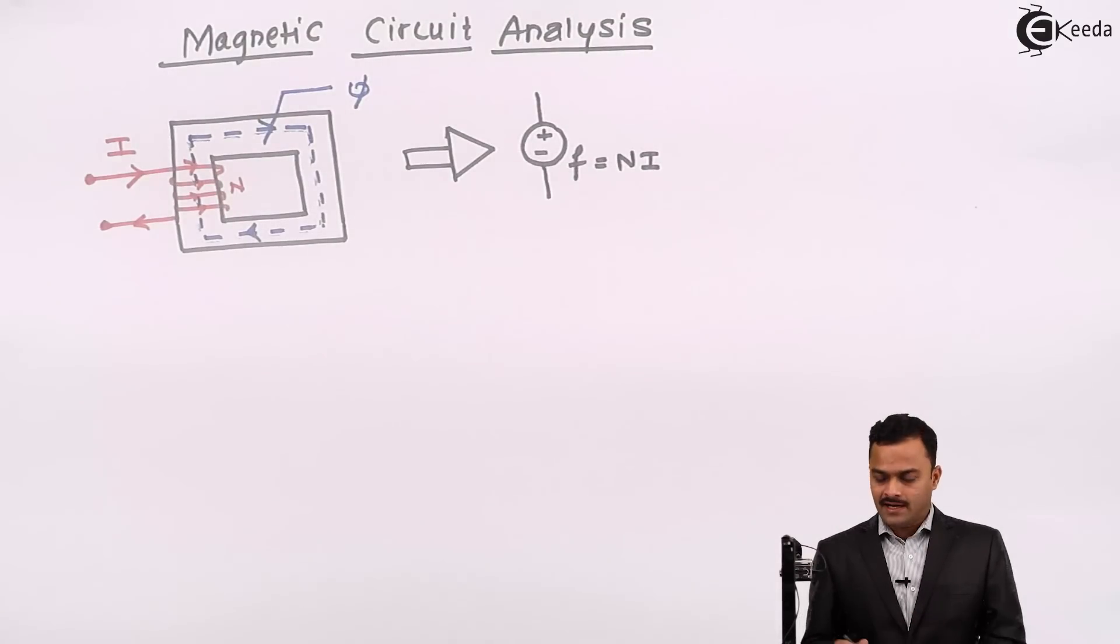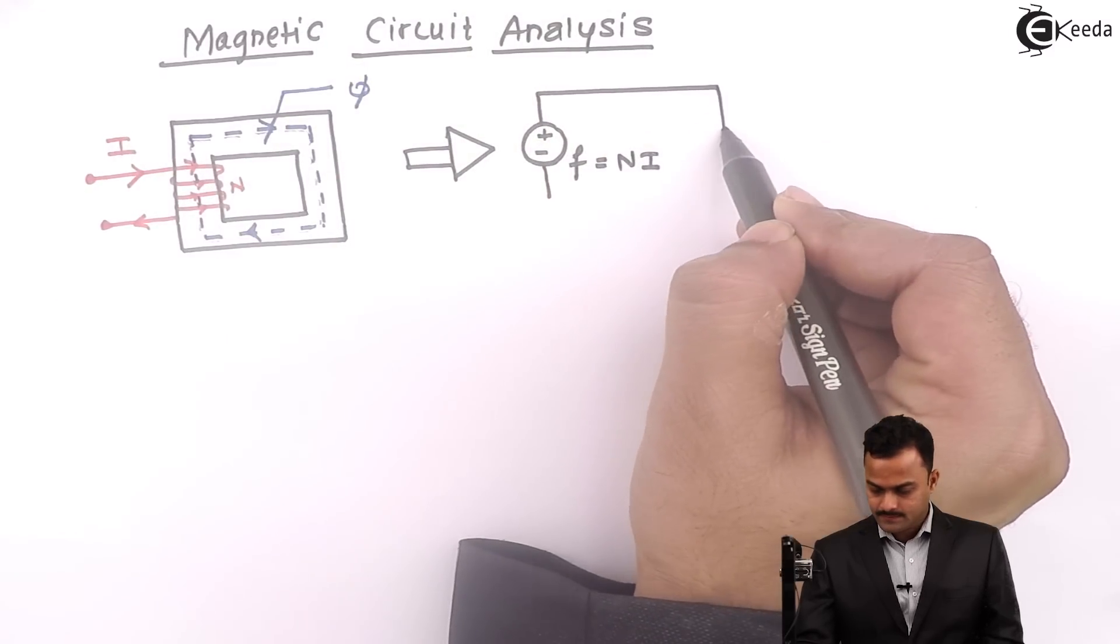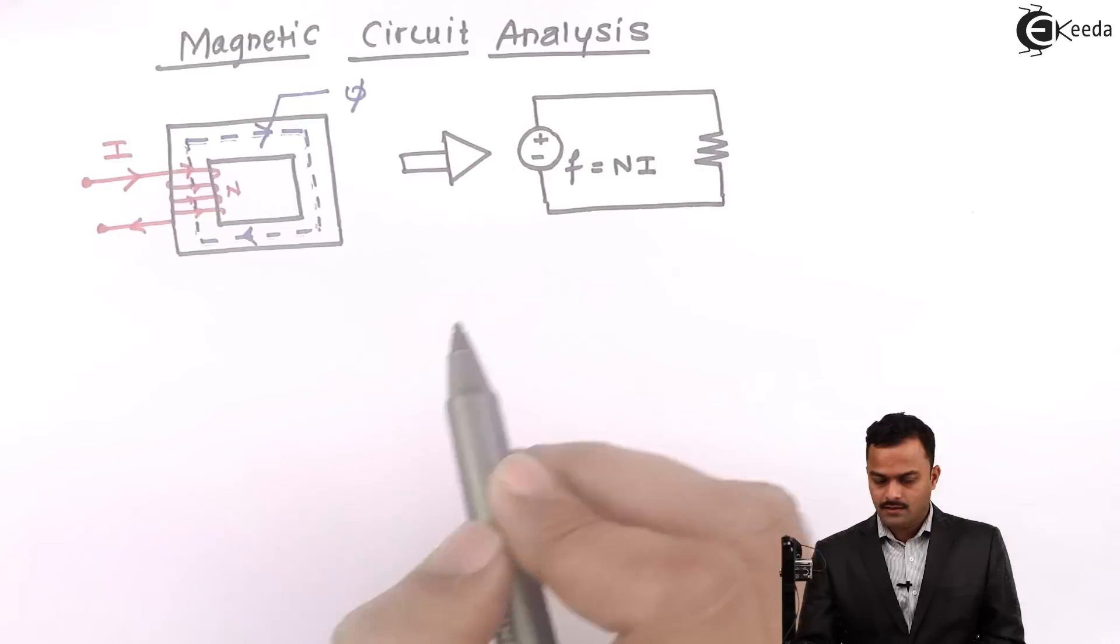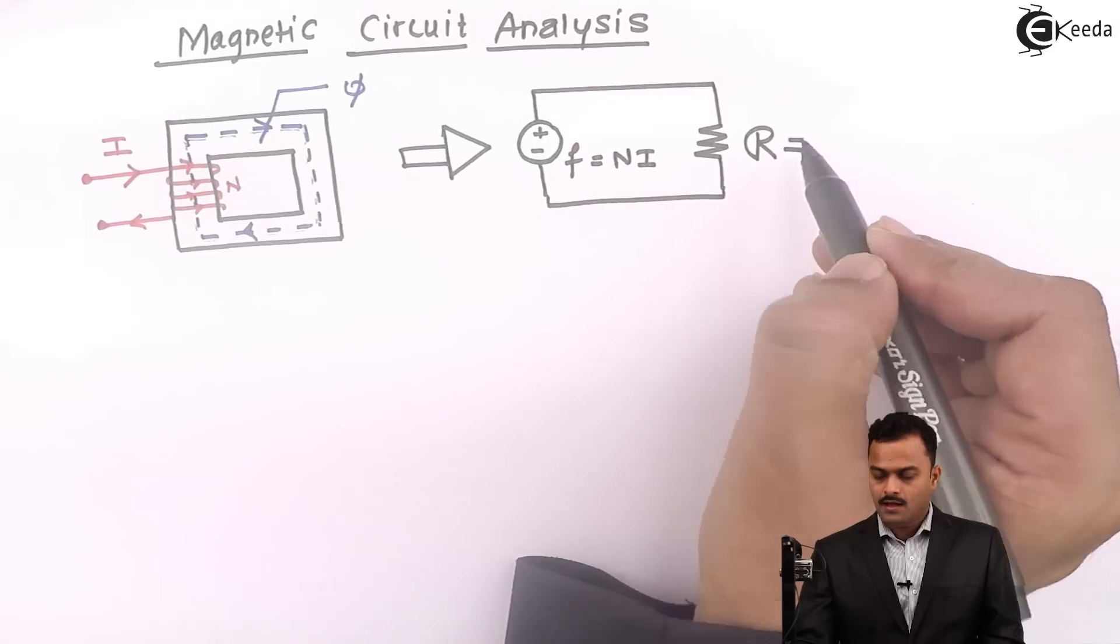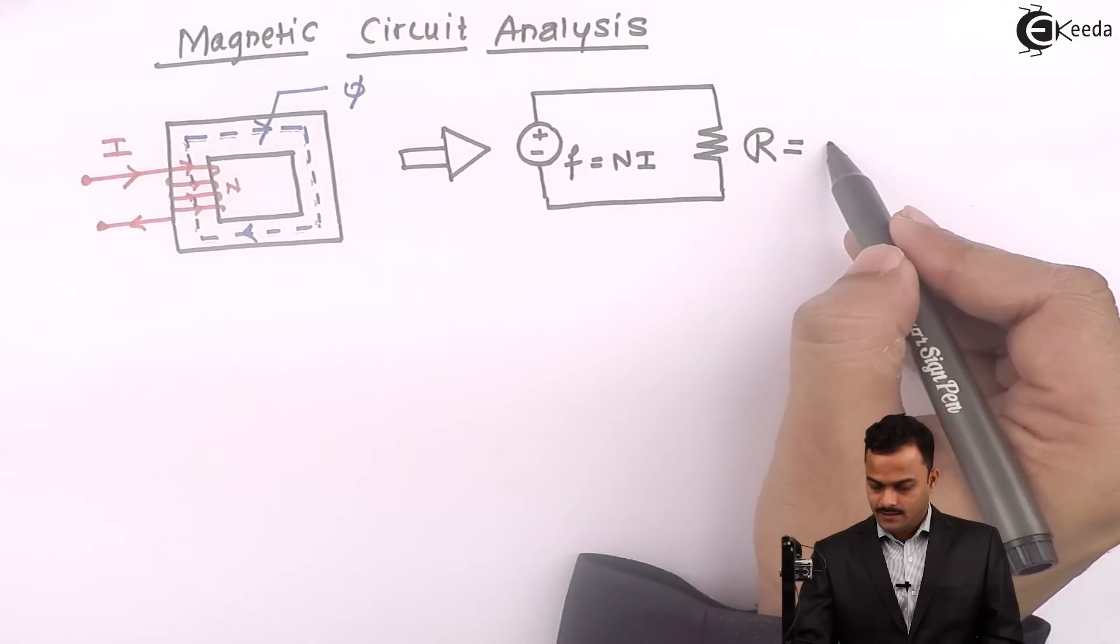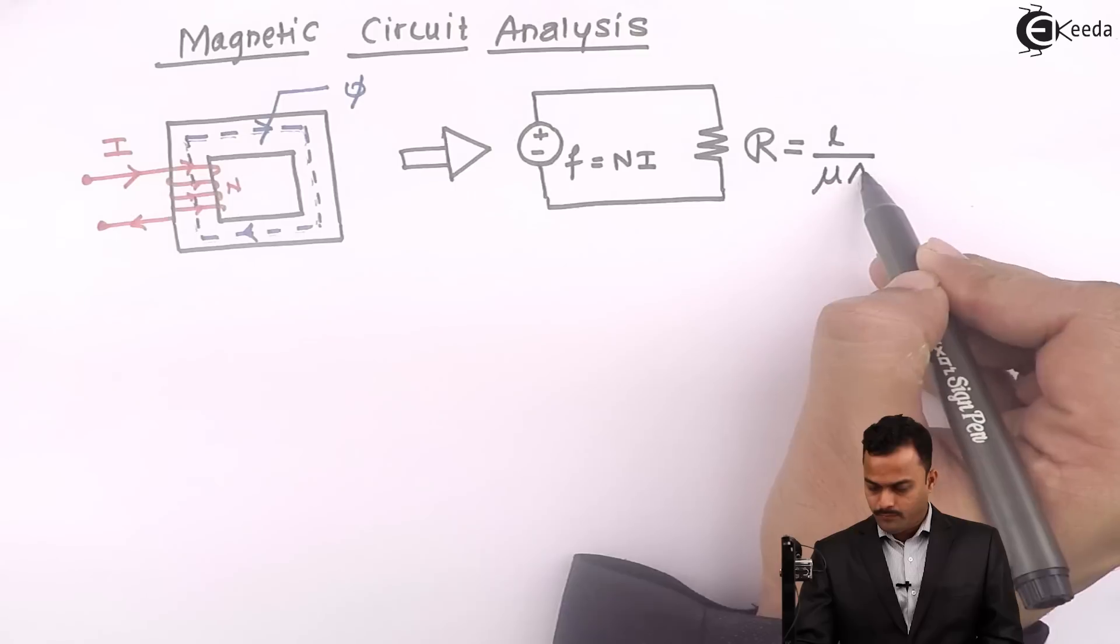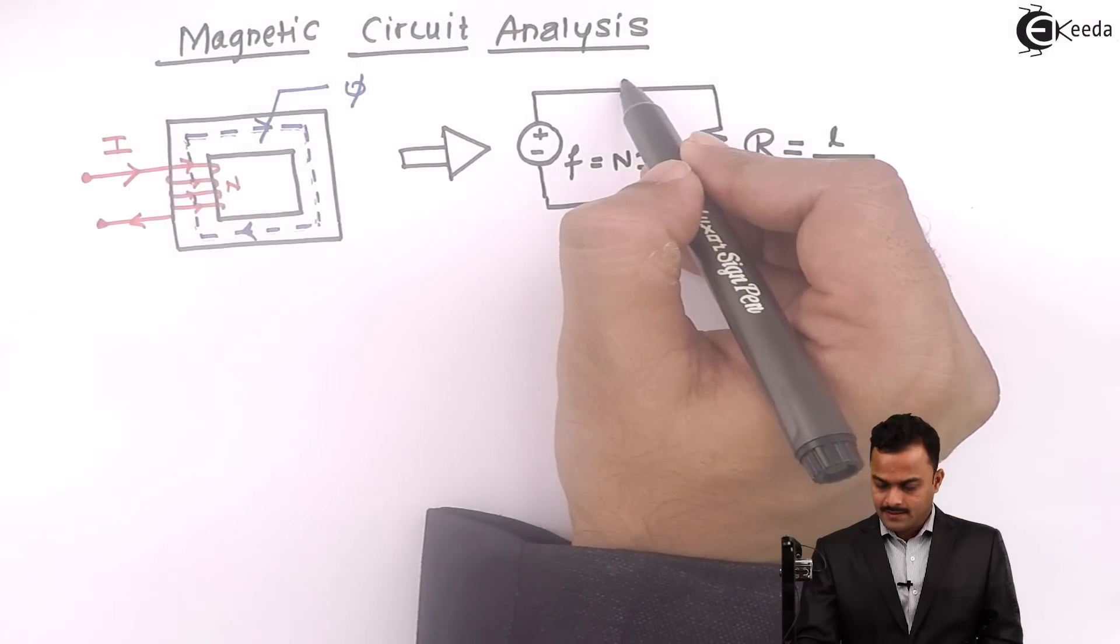This core will have some reluctance, and I can represent it like this. I will call this as R, given by L divided by μA, and flux φ is like a current.